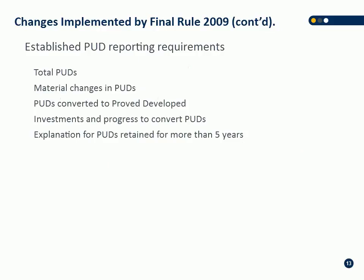Prior to the final rule in 2009, you weren't actually allowed to disclose undeveloped volumes. In 2009 they established the reporting requirements for undeveloped reserves. You're now required to report the total proved undeveloped volume, material changes year over year to proved undeveloped volumes, and how much undeveloped volume converted to developed and proved every year. You also have to disclose investments in progress — how much capital has been spent to develop those undeveloped volumes — and if you go beyond the five-year limit recommended by the SEC, you must disclose the reason for keeping proved undeveloped reserves beyond five years.